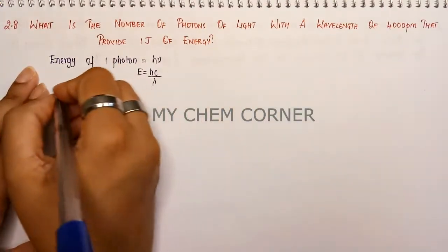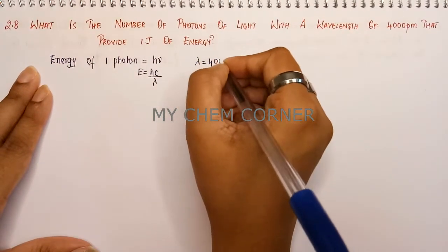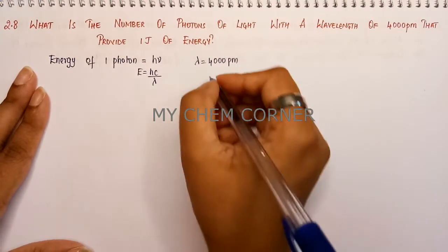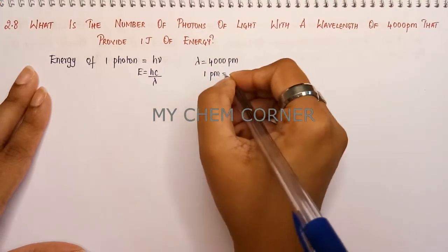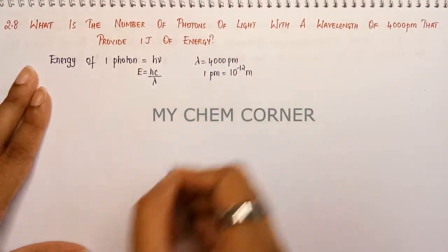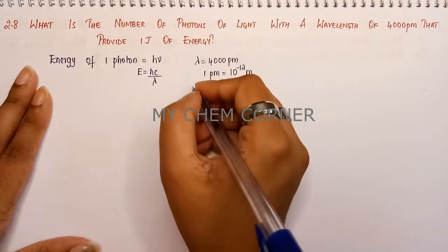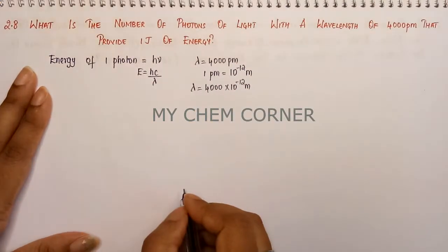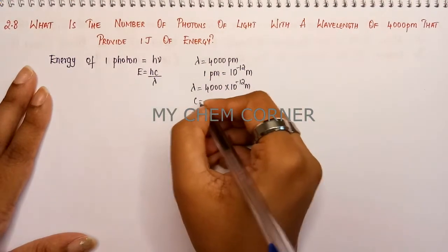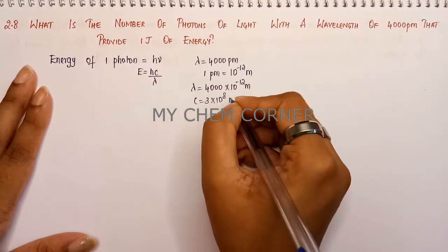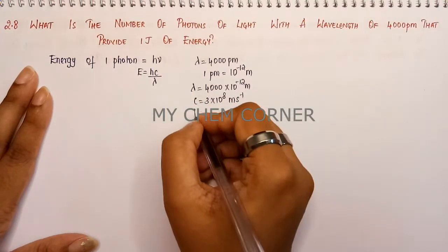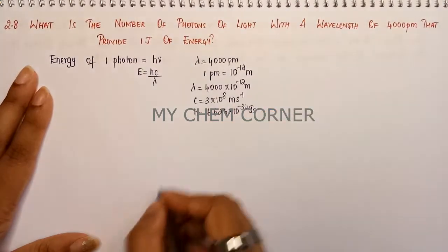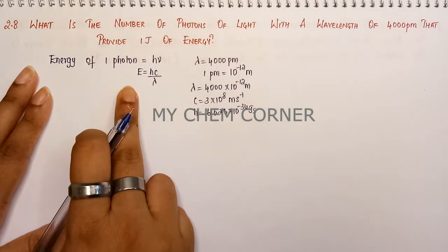The lambda value given is in picometers — 4000 picometers — but we need it in meters. The conversion is 1 picometer = 10 to the power minus 12 meters, so lambda becomes 4000 × 10⁻¹² meters. C is a constant equal to 3 × 10⁸ m/s, and Planck's constant h is 6.626 × 10⁻³⁴ joule·second.